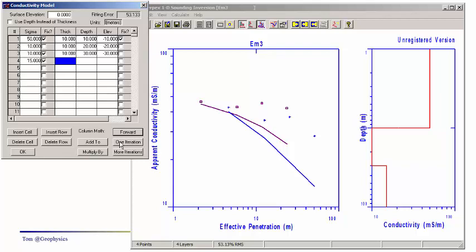And the iterations, what they do is they try to minimize the difference between the calculations and the observations.